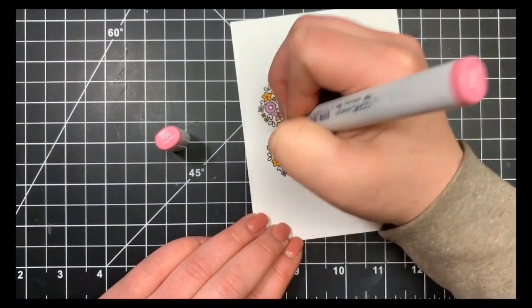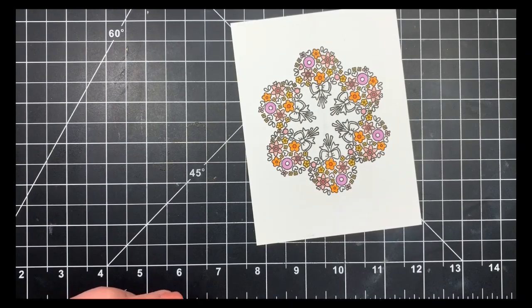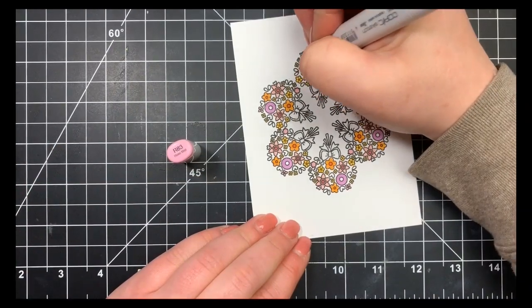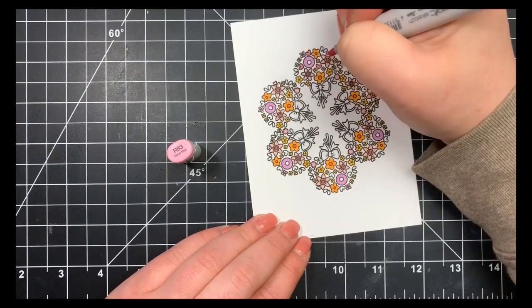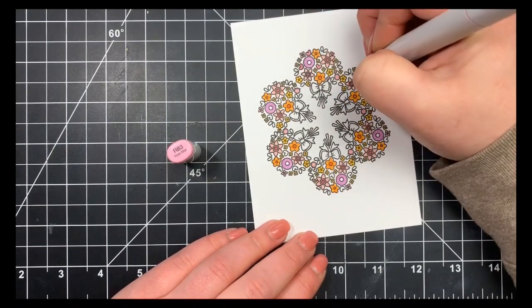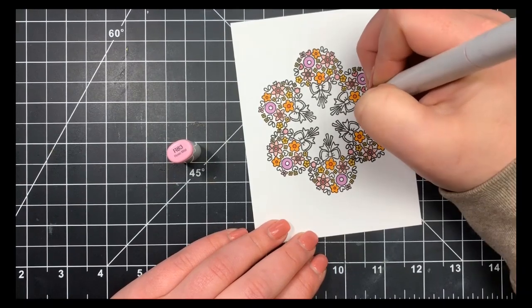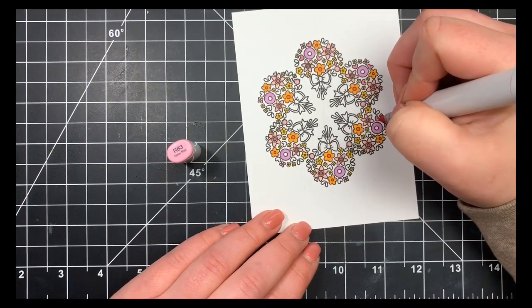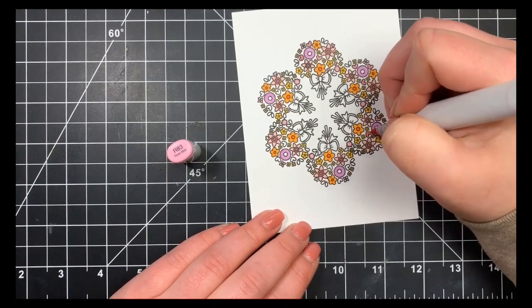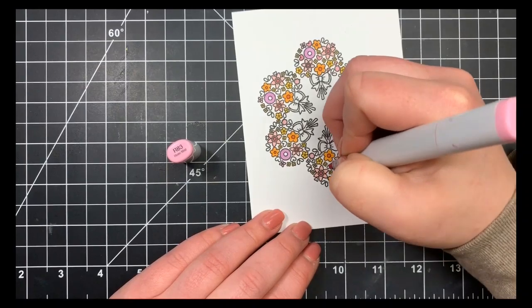I'm bringing in my R85 for the center of those flowers, and I'm also going to leave that out because that's one of the colors I use for shading the little bows as well. For the little hearts, I'm bringing in the R83, which I'll also be using for the bows.